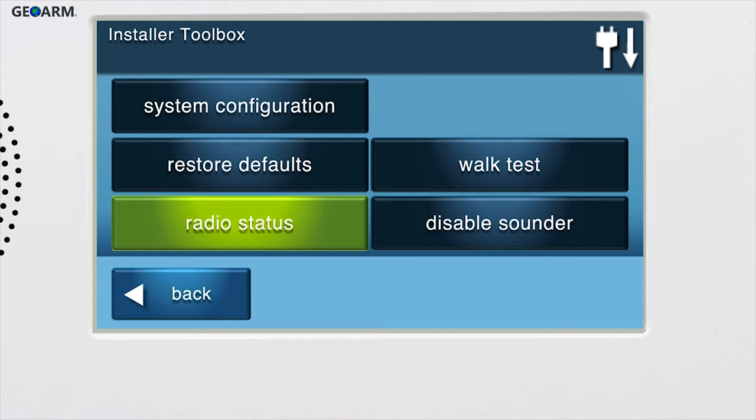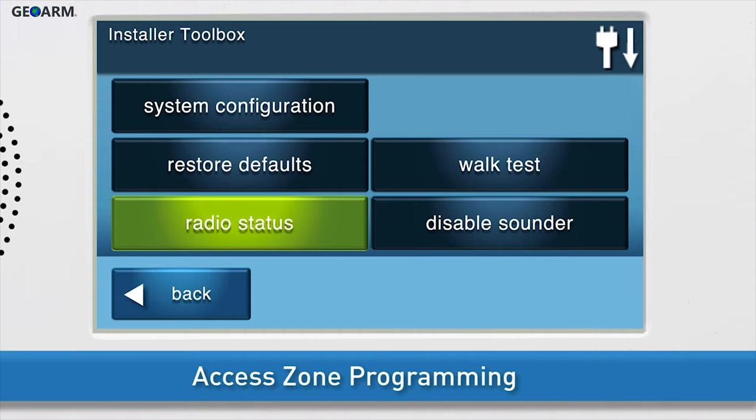You are now in the Installer Toolbox. To access zone programming, press System Configuration.